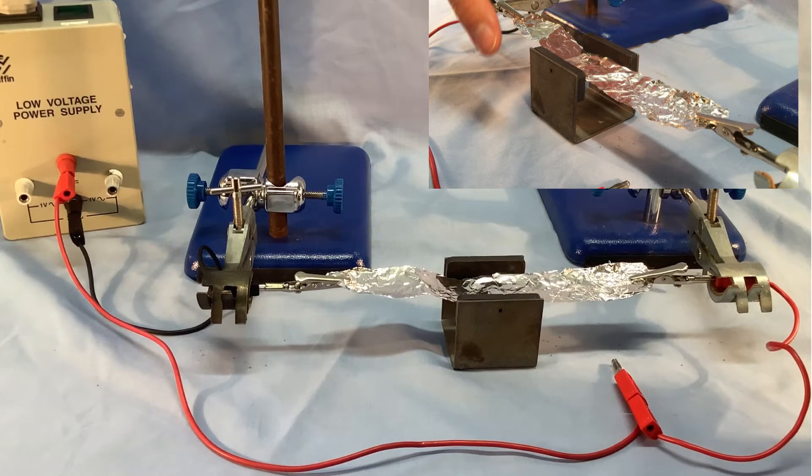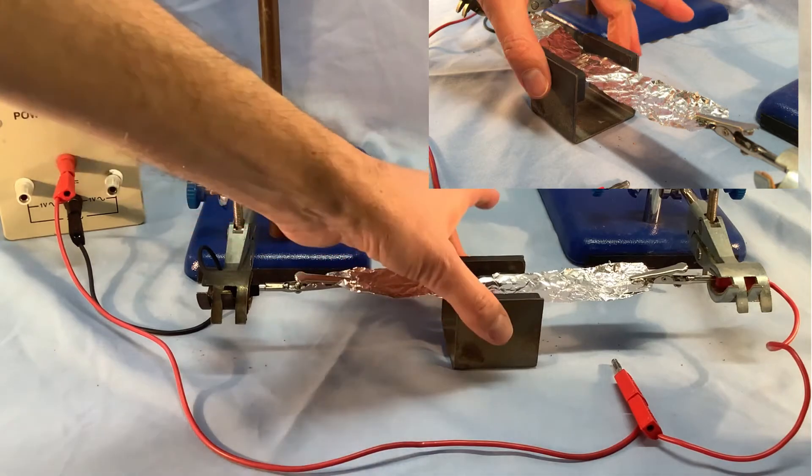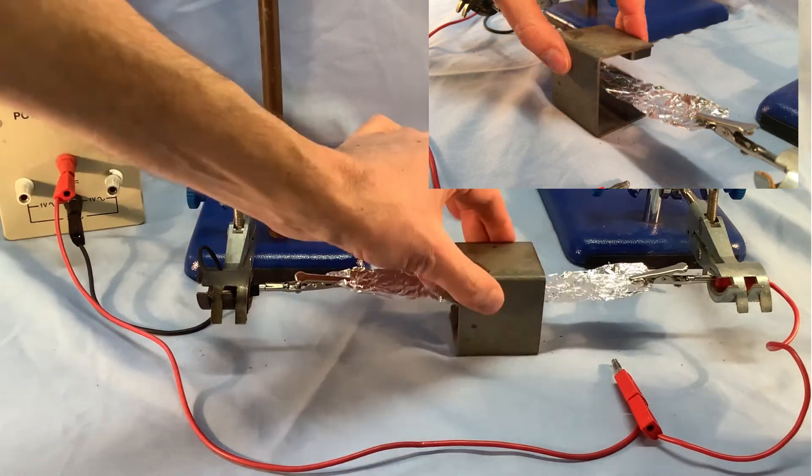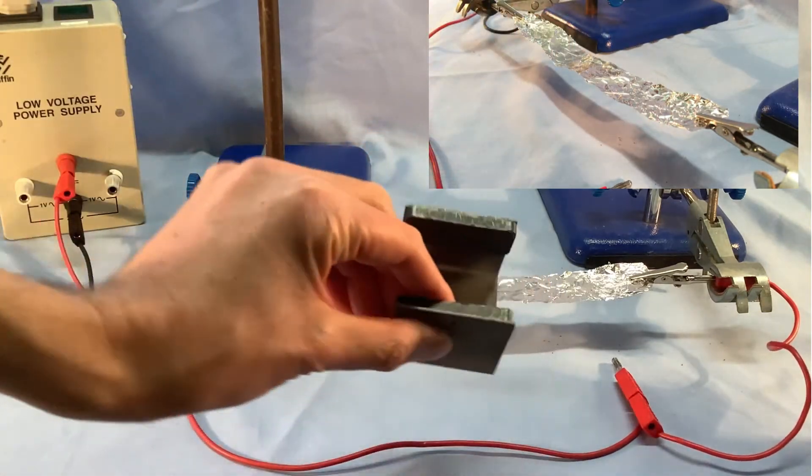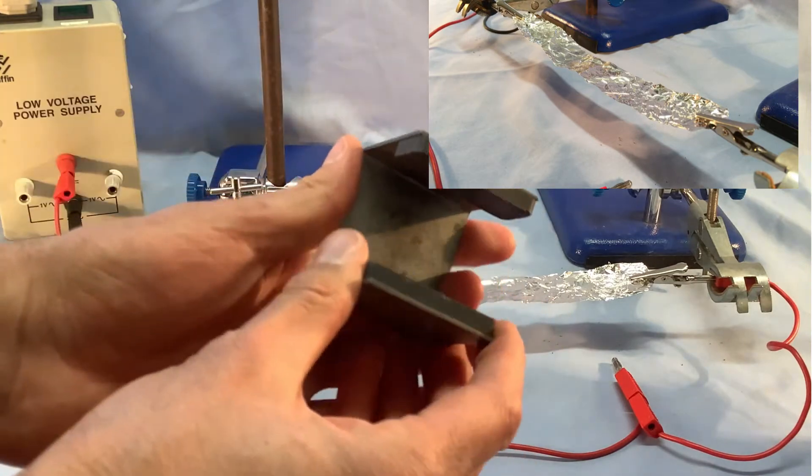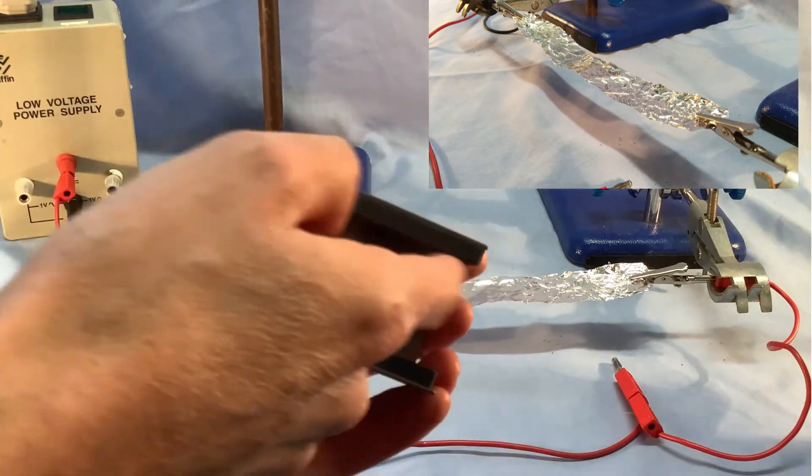We're going to have a look at the motor effect. The setup here has a cradle which contains two magnets, and these are different to bar magnets because they've got one pole here and one pole here.